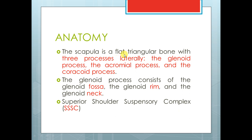...is a triangular bone with three processes: glenoid process, acromial, and coracoid. Regarding the glenoid, it is formed by three parts: neck, fossa, and the surrounding rim.